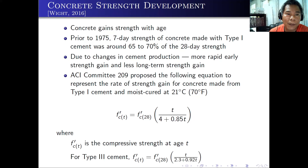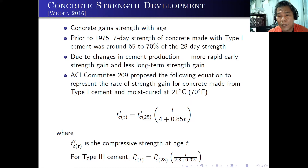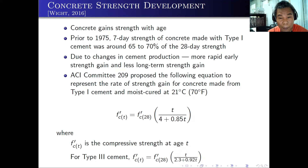We need to learn about concrete strength development. Concrete actually gains strength with age. Prior to 1975, the 7-day strength of concrete made with Type I cement was around 65 to 70 percent of the 28-day strength. You can actually estimate: if your design strength at 28 days is 21 MPa, at 7 days it should be around 70 percent of 21 MPa, which is around 14.7 MPa already. But note that due to changes in cement production, there is now more rapid early strength gain and less long-term strength gain.